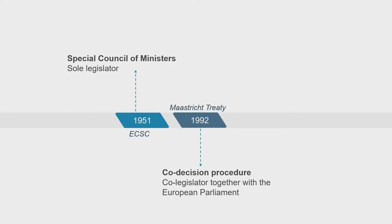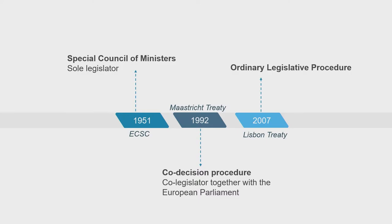In 1992, however, the co-decision procedure was introduced, making the European Parliament a co-legislator together with the Council of the European Union. This procedure evolved into the ordinary legislative procedure when the Lisbon Treaty entered into force in 2009. Today, the Council shares its legislative power with the European Parliament in most EU policy areas. Yet in areas such as foreign and security policy or monetary policy, the Council still plays a dominant role.